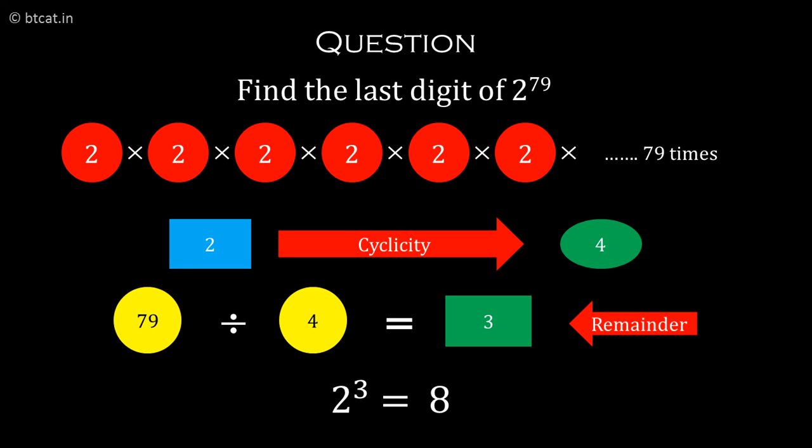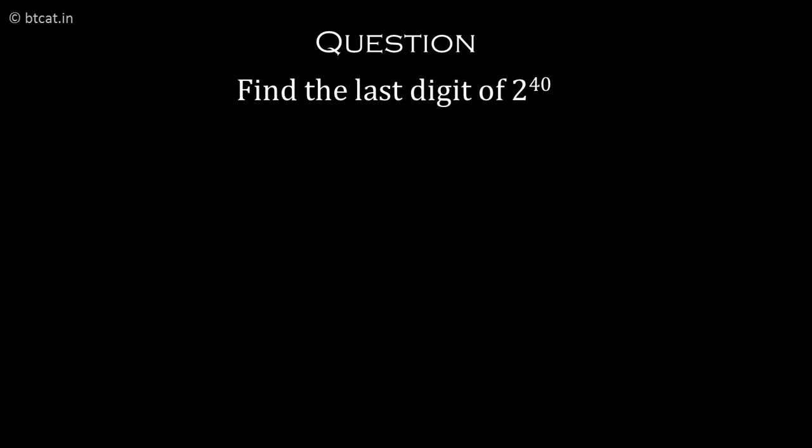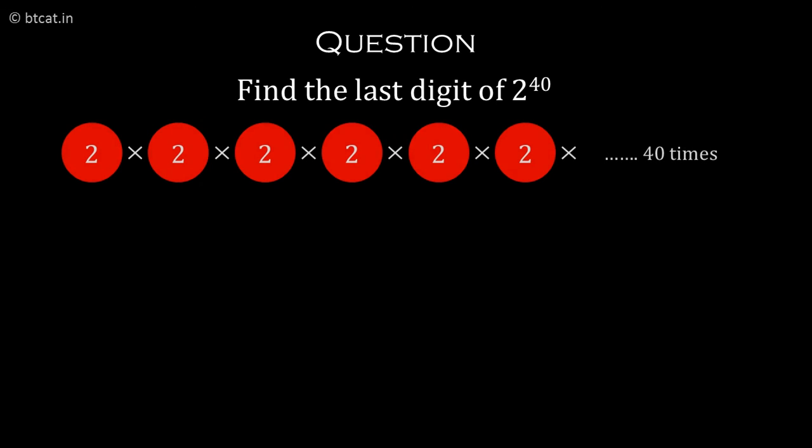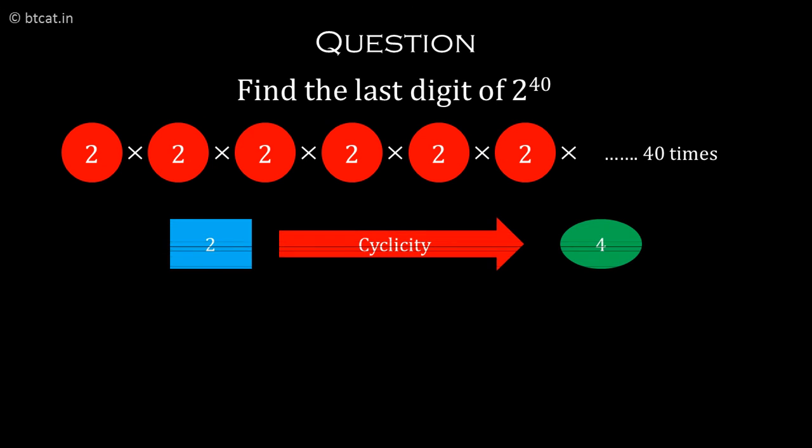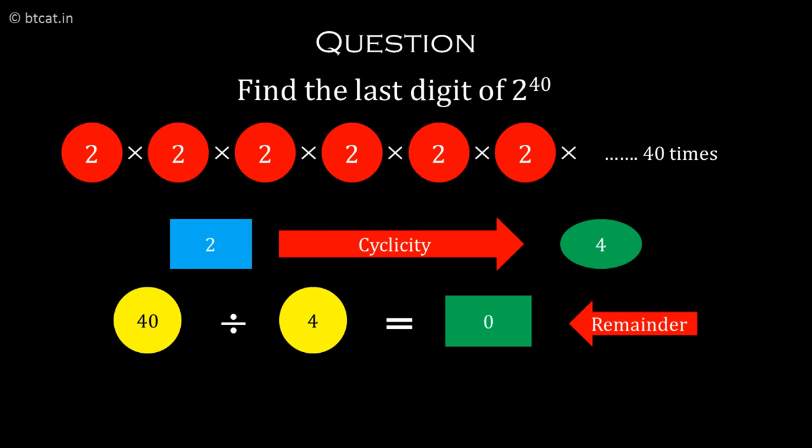Let's take one special case: 2 raised to power 40. What is the last digit? If we apply our rule, 40 divided by 4 gives remainder 0. If we do 2 raised to power 0, we get 1, which is absurd.